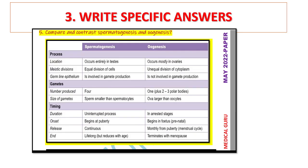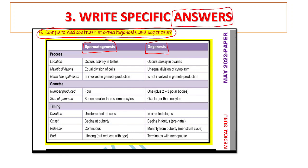Tip three: write specific answers. Whenever a question is asked in the exam, your answer should be very specific to get good marks. For example, if asked to compare and contrast spermatogenesis and oogenesis, you need to write spermatogenesis versus oogenesis in a comparative format. Write specific, to-the-point answers — not vague answers.